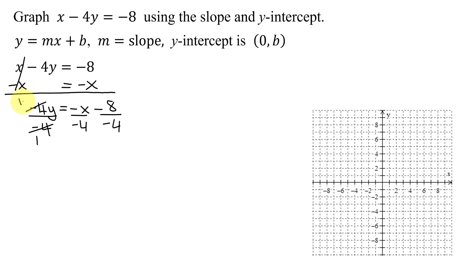So my negative 4s reduce, and I get y equals, a negative divided by a negative is a positive, so I'm going to get x over 4. Negative 8 divided by negative 4 is positive 2. Now my equation is in slope-intercept form.